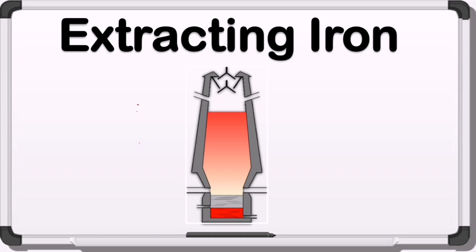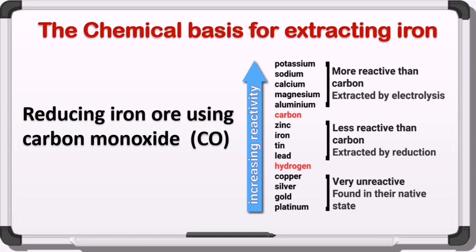First of all, here we have the chemical reactivity series. Metals above carbon are more reactive than carbon, so they can't be extracted using carbon. In other words, carbon can't be used to replace any one of these metals in their ore, because they are more reactive than carbon. So instead we can use electrolysis.